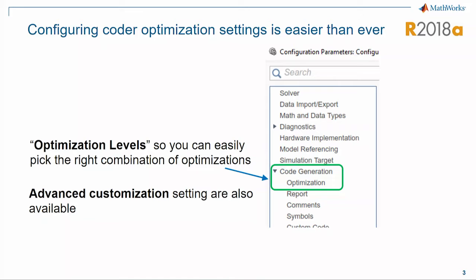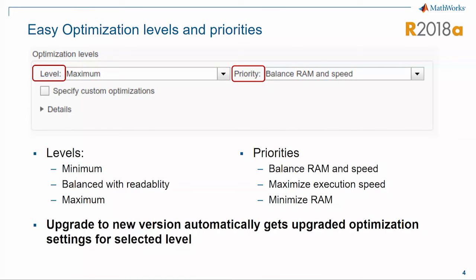To address this, we brought in the concept of optimization levels and offered it as part of the code generation optimization. For the simulation-only part, we kept those as part of the math and data types configuration. And for advanced users, we also offer advanced customizations.